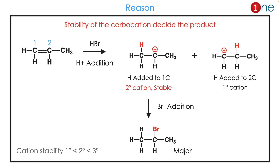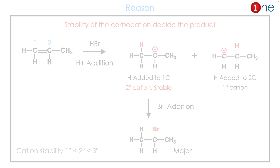There are two possibilities for HBr addition: you can add H⁺ to the first carbon or the second carbon. If you add H⁺ to the first carbon, you get a secondary cation; if you add to the second carbon, you get a primary cation. The secondary cation is more stable, so the reaction proceeds that way, and bromine is added to the more substituted carbon, which leads to the stable cation.